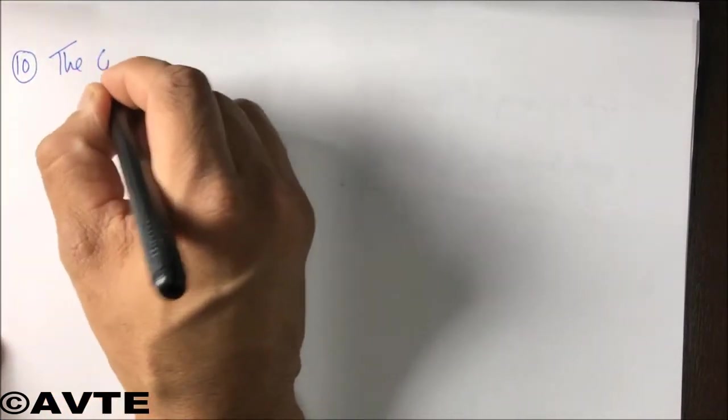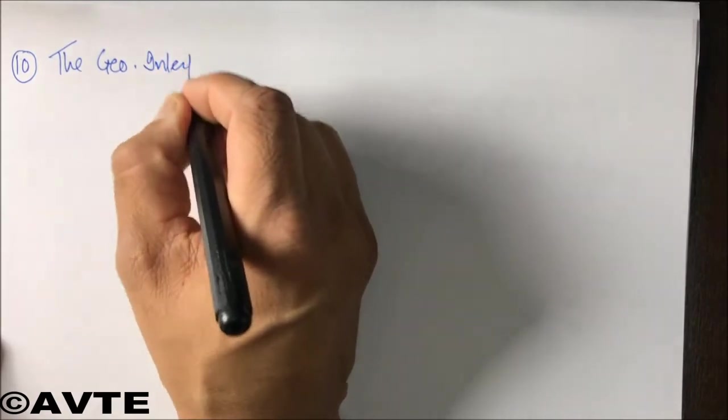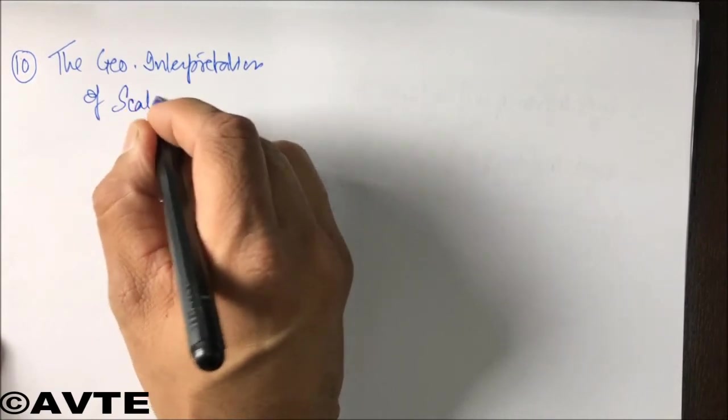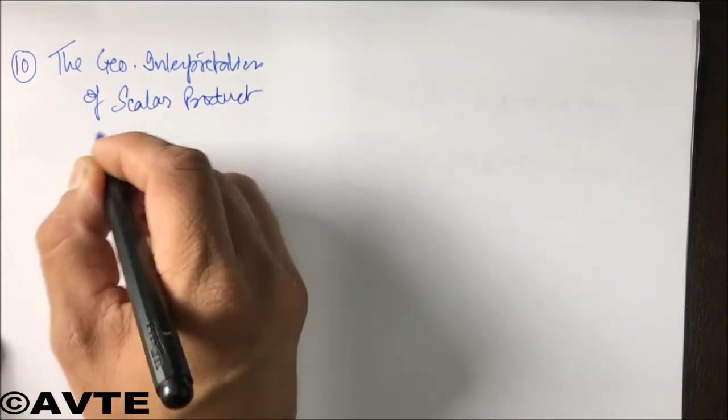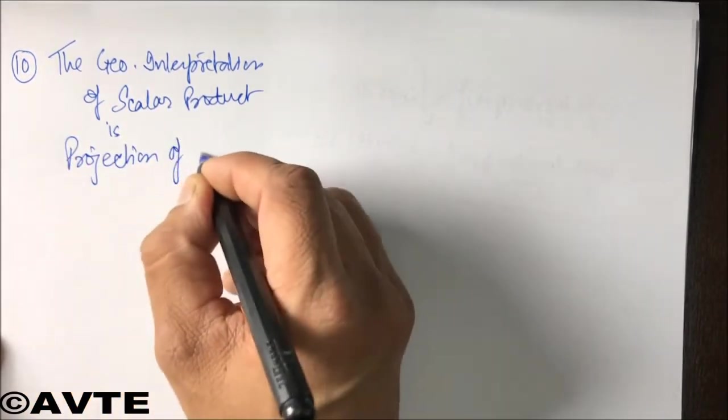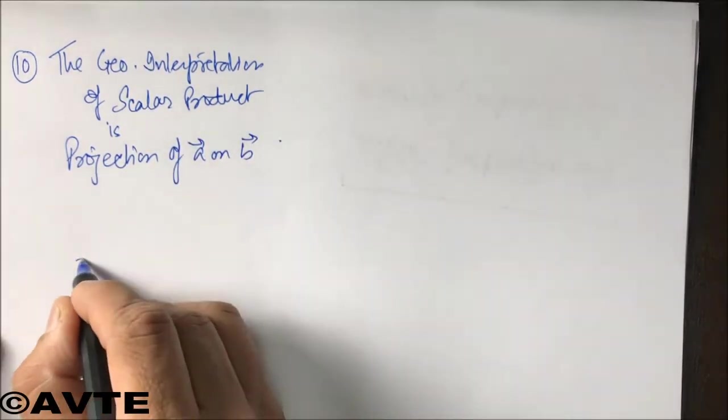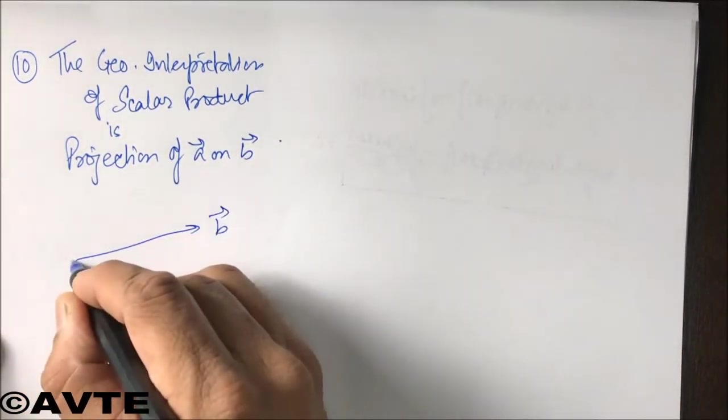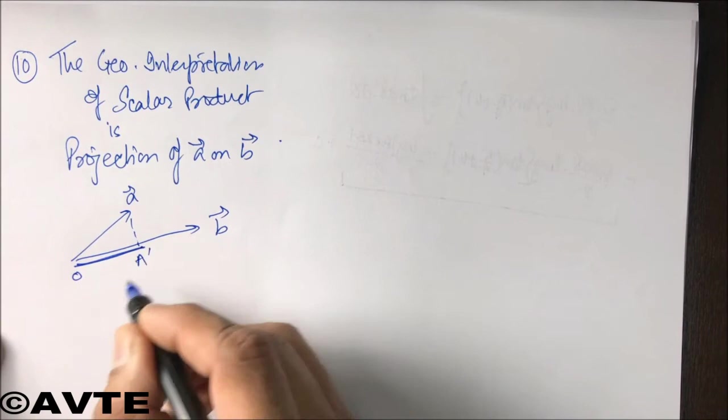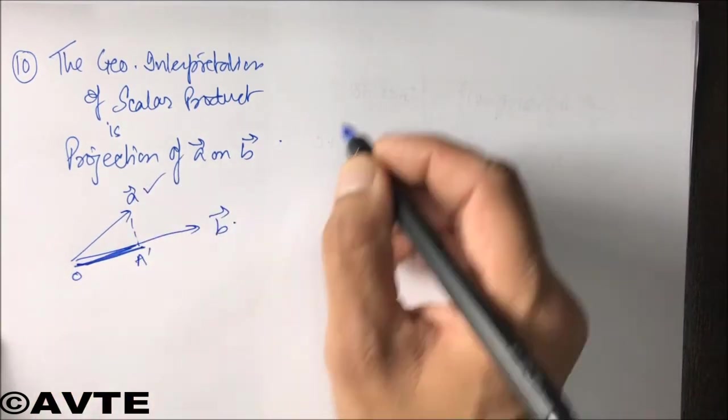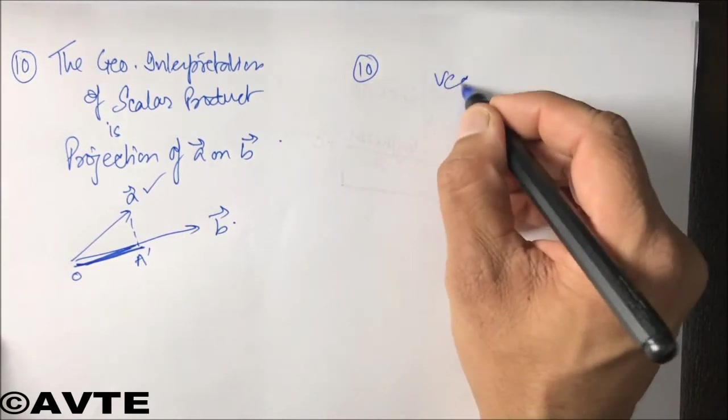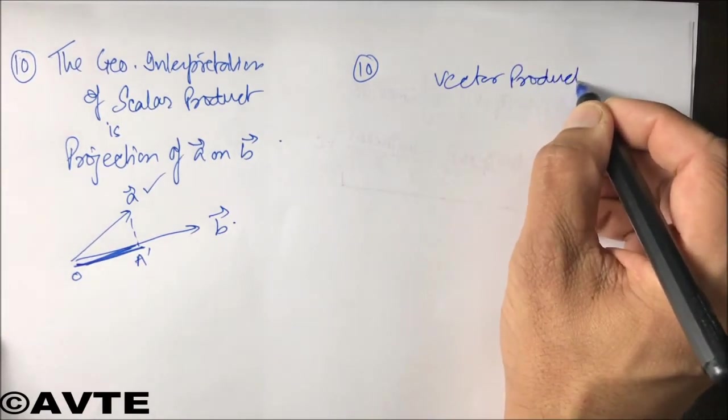Coming on to the next, the geometric interpretation of scalar product is projection - projection of one vector on the other. If this is the b vector and this is a vector, then this distance, say OA dash, is the projection of a vector on b.